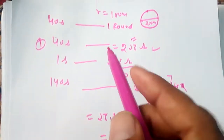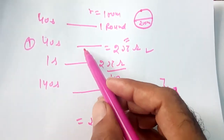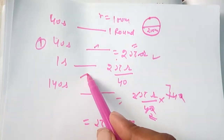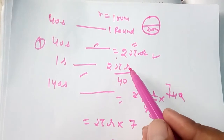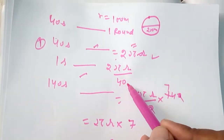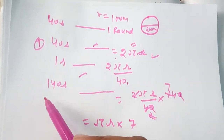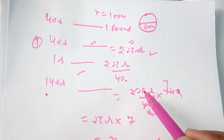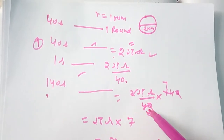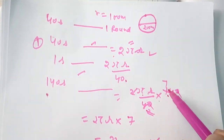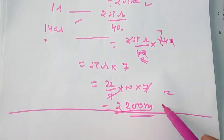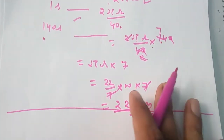In 40 seconds, one round is covered. In 1 second, one round upon 40. And in 140 seconds, 2πr means 1 round upon 40 into 140. After calculation, you will get the answer 2200 meters.